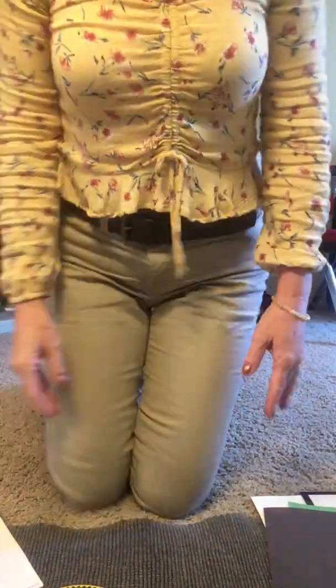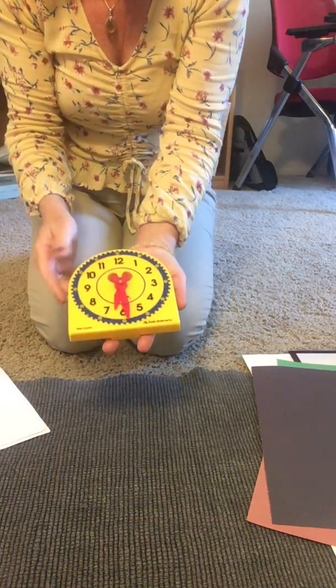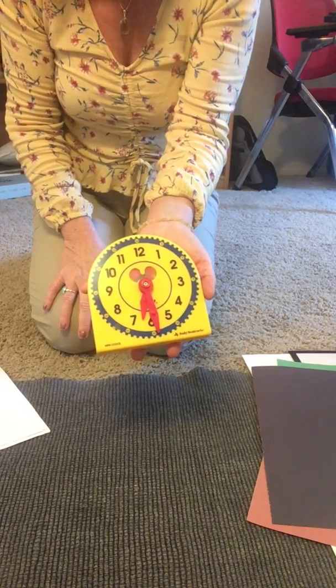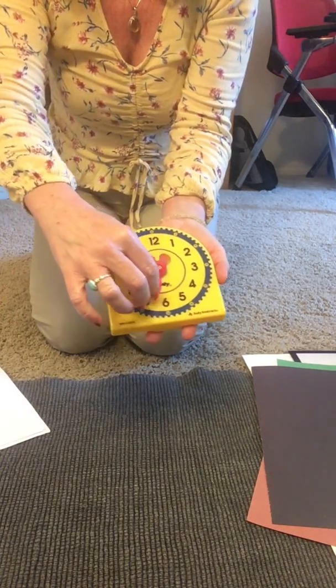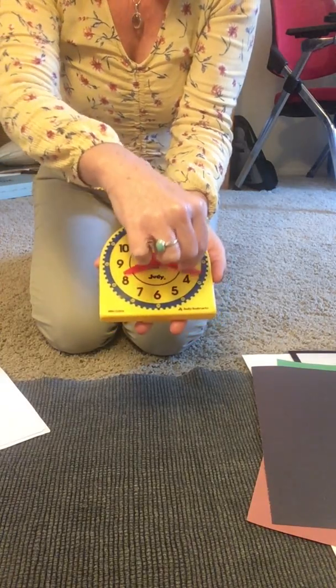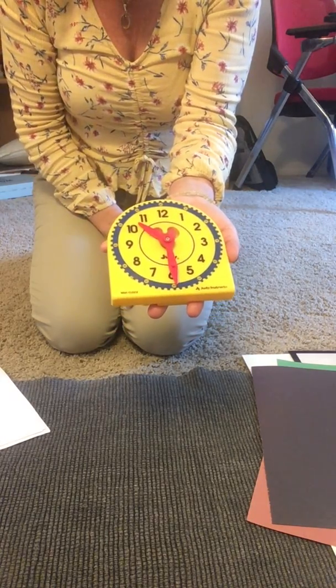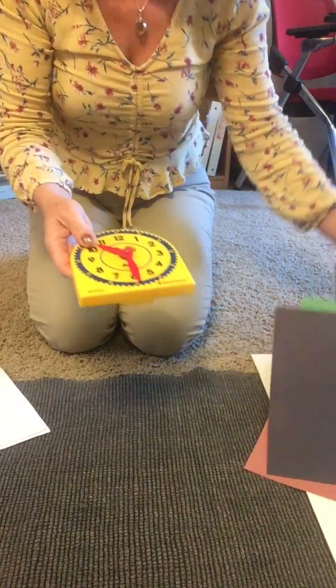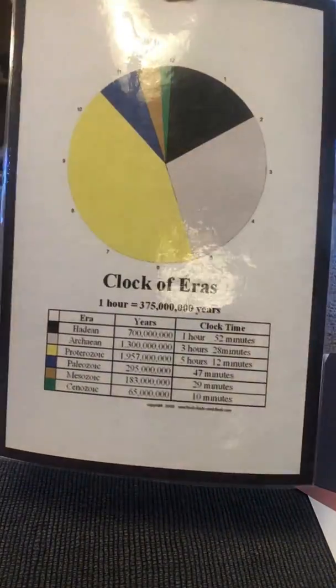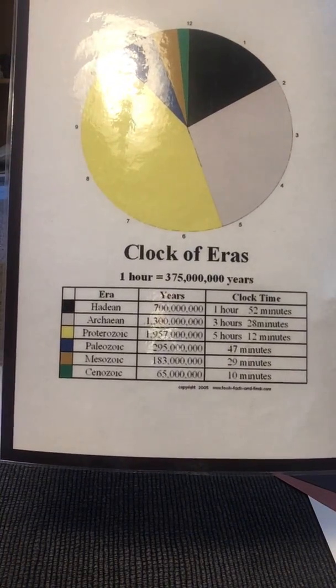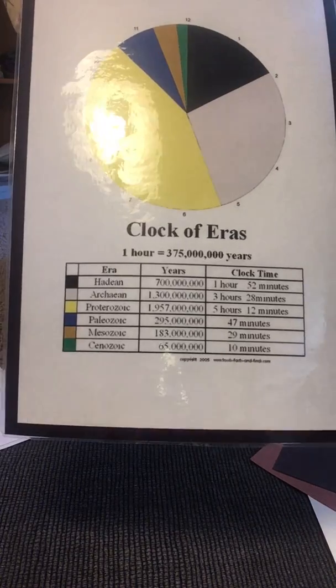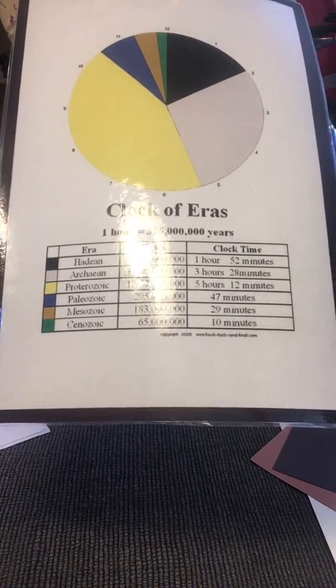I'm going to move my camera down so you can see my work rug. Can you see it now? This is a clock for telling time — look at the hands on the clock. The hands show the passage of time: minutes, hours, and of course other clocks also have a second hand. This clock is telling time as it's passing right now. We are going to make a Clock of Eras.